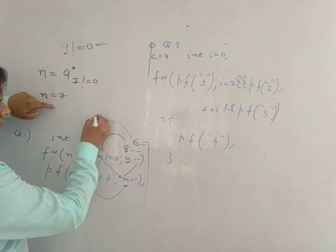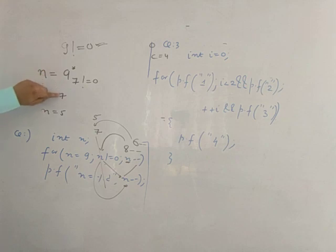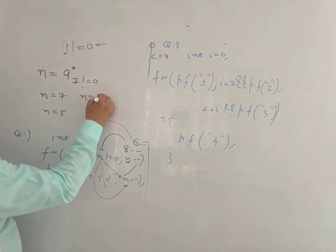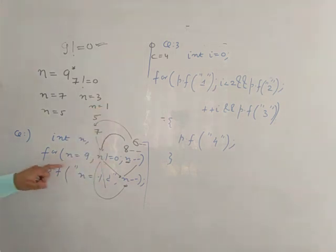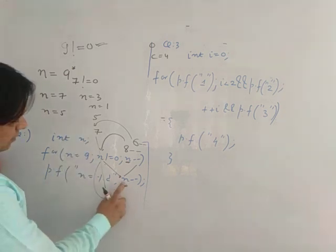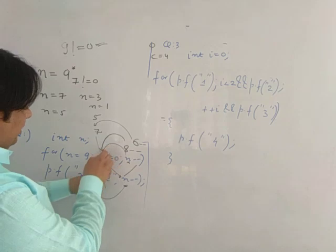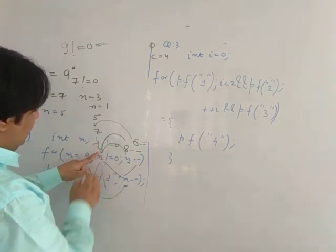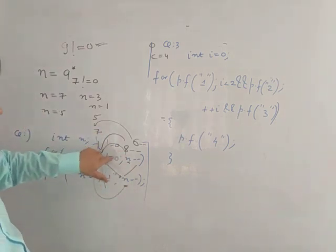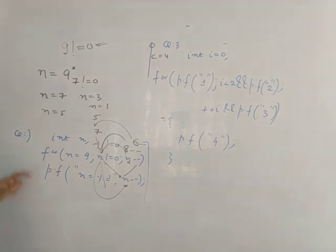Next iteration: 6--, then it comes back as 5, prints 5. You can see the pattern: 9, 7, 5, 3, 1 — a difference of 2 each time. After printing 1, the value of n becomes 0 via post-decrement. When the loop checks, n is now -1, which is not equal to 0, so condition is true again. This makes it an infinite loop.